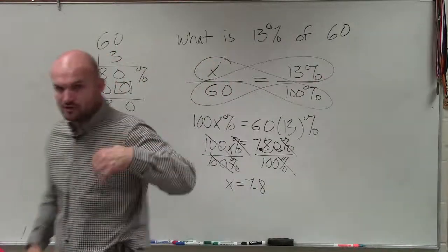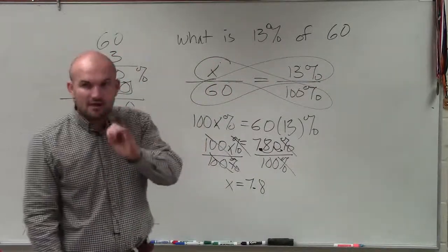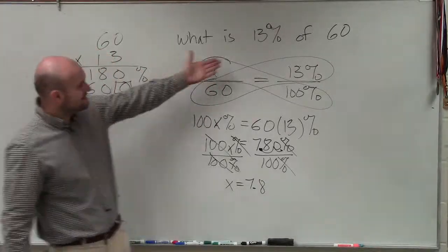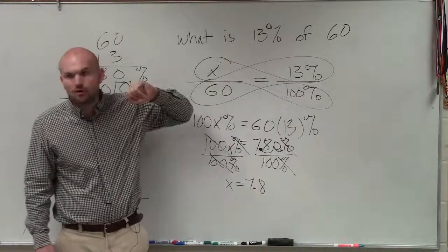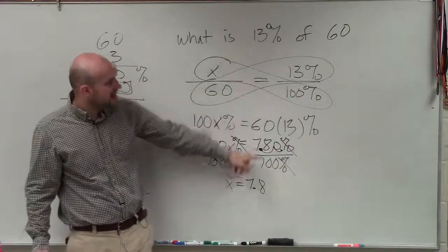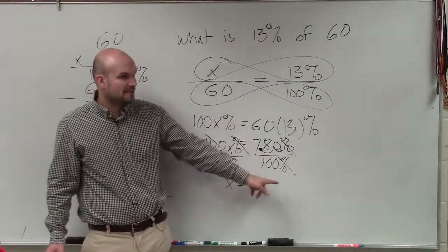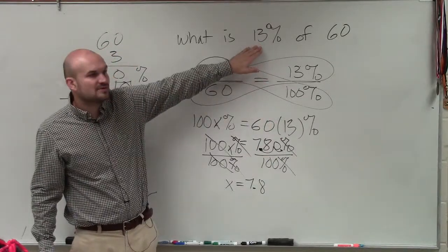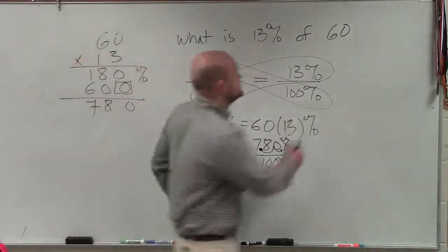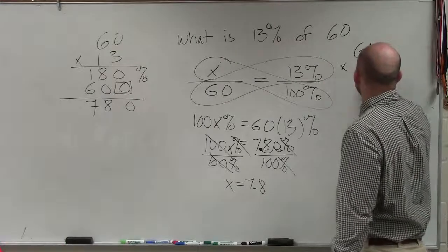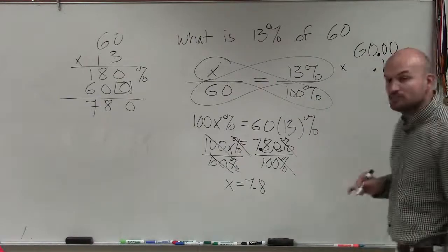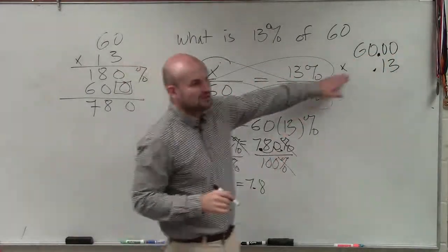The next thing I want to show you is a different way. When you're allowed to have a calculator, the easiest thing to understand is just multiply your percent times your whole number — that's really basically all you're doing. You can get rid of your percents by simply dividing by 100, so I'm multiplying 60 times 0.13.